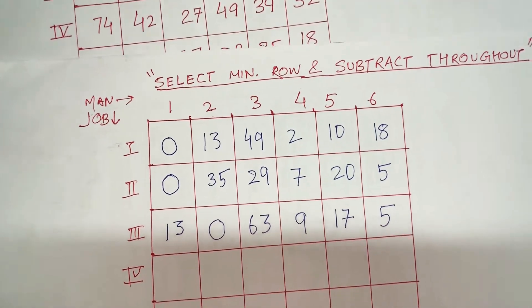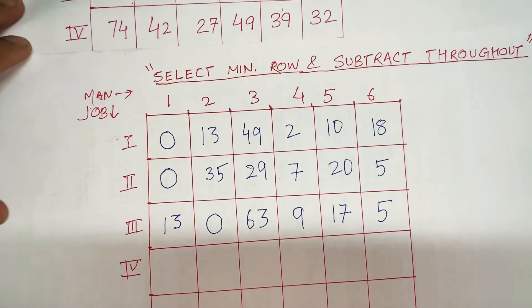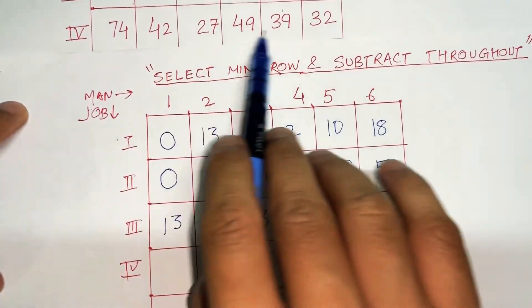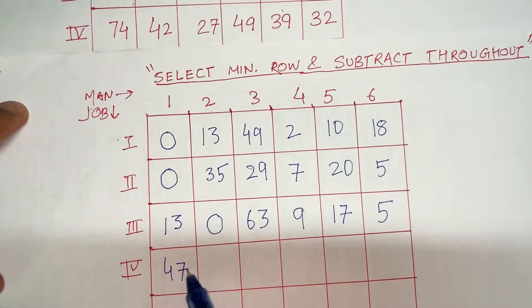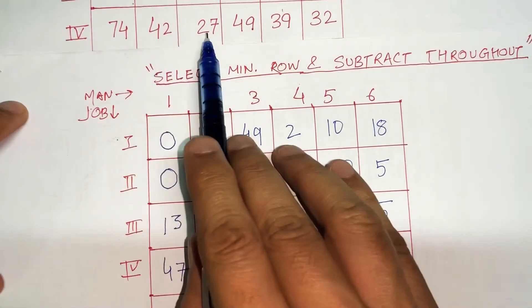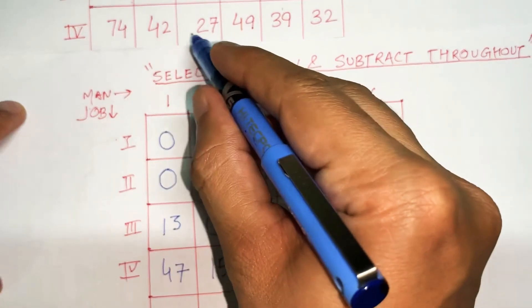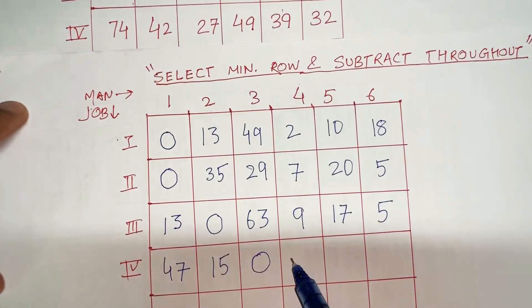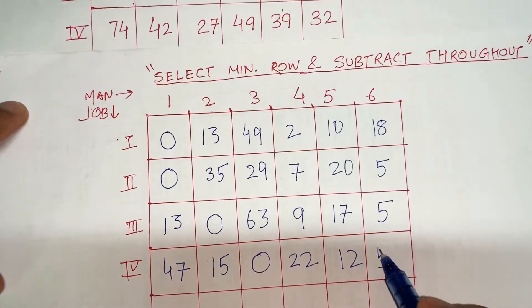Now let's move to the fourth row. The minimum in the fourth row is 27, so we are going to subtract 27 throughout: 74-27=47, 42-27=15, 27-27=0, 49-27=22, 39-27=12, and 32-27=5.